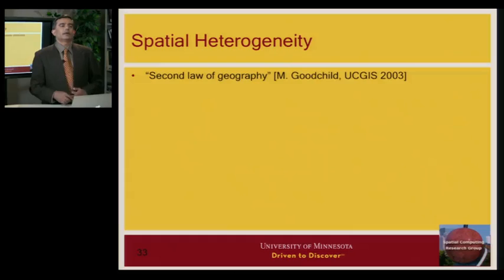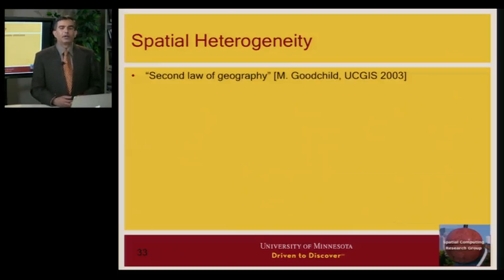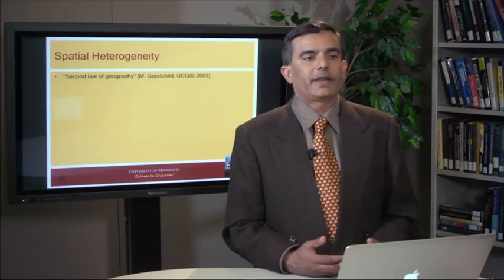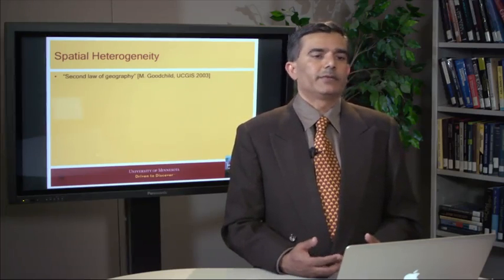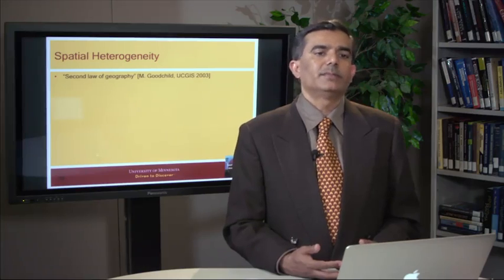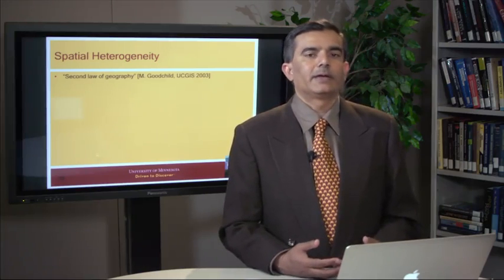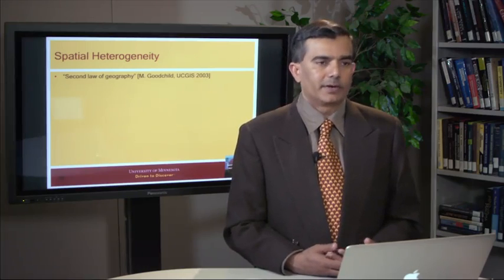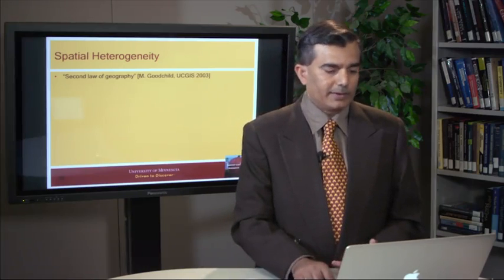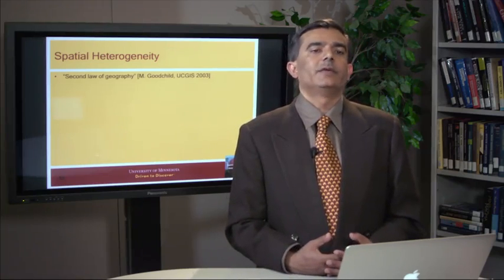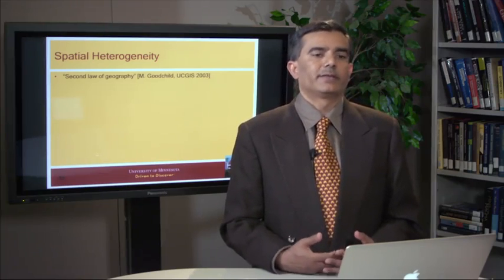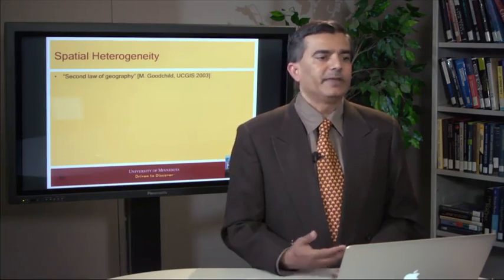If spatial autocorrelation is the core concept in this module, then the second main property is heterogeneity. As people say, what does well in agriculture in Minnesota may not do well in Texas or Florida — people have to develop their own agricultural practices. If you want to predict agricultural success, you should probably build slightly different models in Minnesota, Texas, and Florida, using different features.